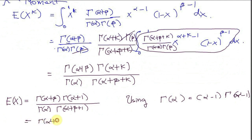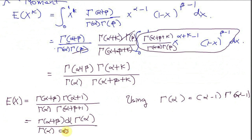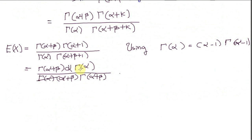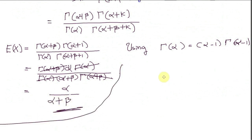Therefore, in the numerator I have gamma of alpha plus beta times alpha times gamma of alpha, and in the denominator I have gamma of alpha times (alpha plus beta) times gamma of alpha plus beta. Gamma of alpha cancels with gamma of alpha, and gamma of alpha plus beta cancels with gamma of alpha plus beta. Therefore I'm left with the expected value of x equal to alpha divided by alpha plus beta.